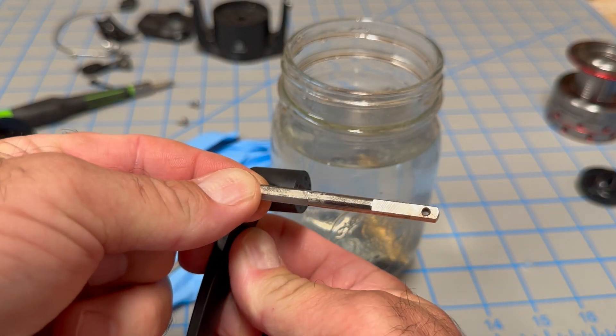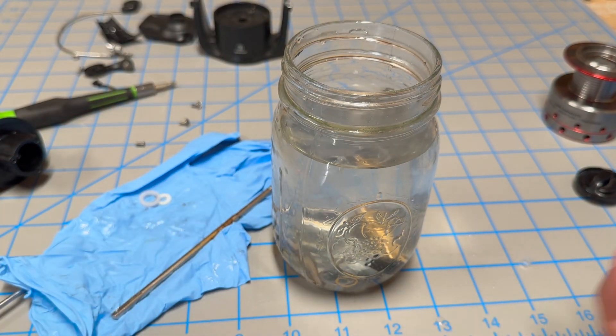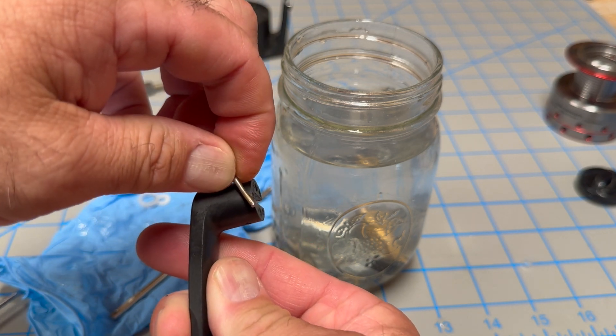This is the spindle that was inside the handle. Let's see if this will rust. Here's the pin that held that spindle into the handle there, just like that.